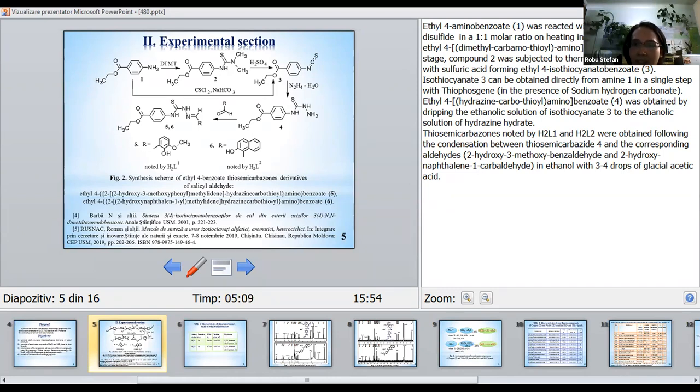Ethyl-4-hydrazinecarbothioyl-amino-benzoate 4 can be obtained by dropping the ethanol solution of isothiocyanate 3 to ethanol solution of hydrazine hydrate. Thiosemicarbazones denoted by H2L1 and H2L2 were obtained following the condensation between thiosemicarbazide 4 and the corresponding aldehydes.